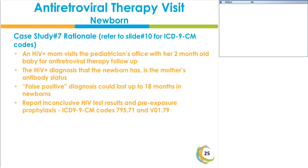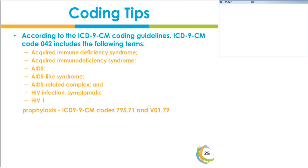The rationale: The HIV-positive diagnosis the newborn has is actually the mother's antibody status and not a confirmed infection in the infant — this is a false positive. A false positive diagnosis can last up to 18 months in newborns. The two codes reported for this encounter are 795.71 (inconclusive HIV test results) and V01.79 (pre-exposure prophylaxis/exposure).